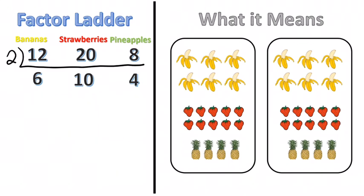Now 6, 10, and 4 are still divisible by something. They're all even numbers so that means I can still divide them by 2 again. So if I divide 6 divided by 2 I get 3, and 10 divided by 2 is 5, and 4 divided by 2 is 2.